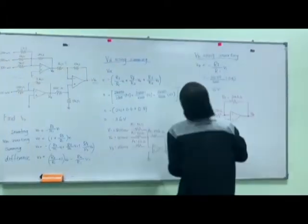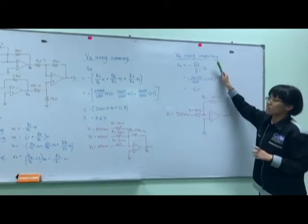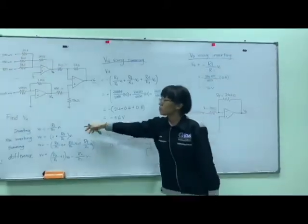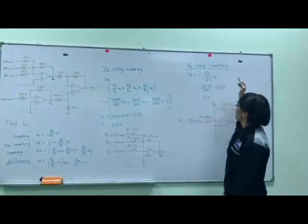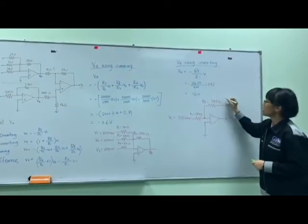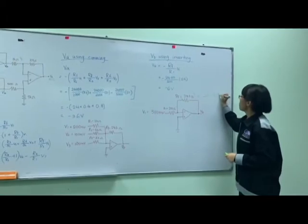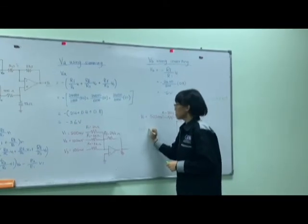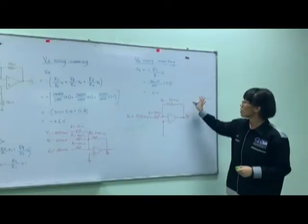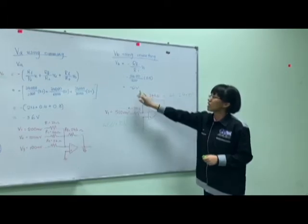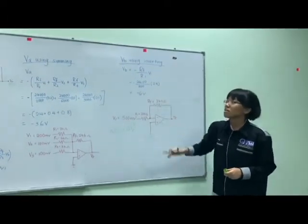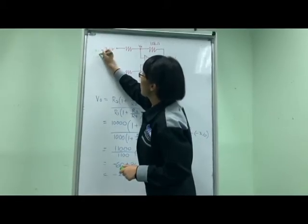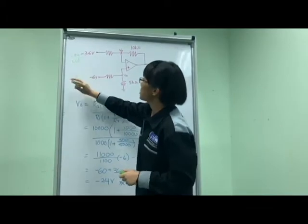Next, we find VB using the inverting formula, since this section is connected to the inverting input. We convert the resistance values: 2.4 kilohms becomes 2.4 times 10 to the power of 3, and the millivolt input becomes 500 times 10 to the power of negative 3. After inserting all these values into the formula, we get negative 6V for VB.